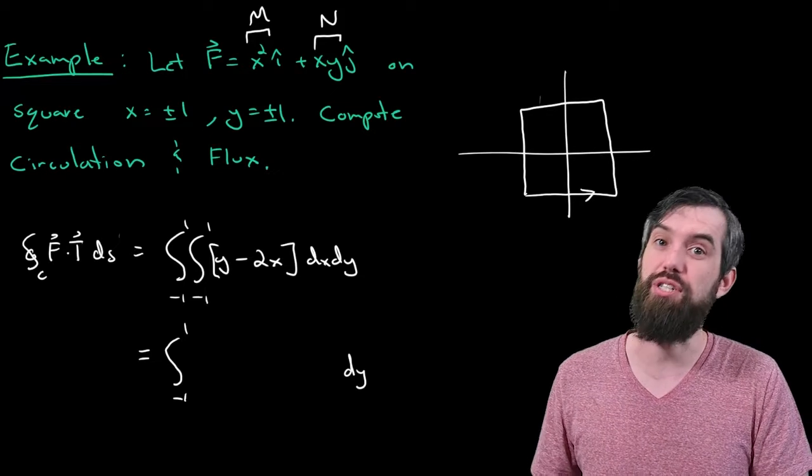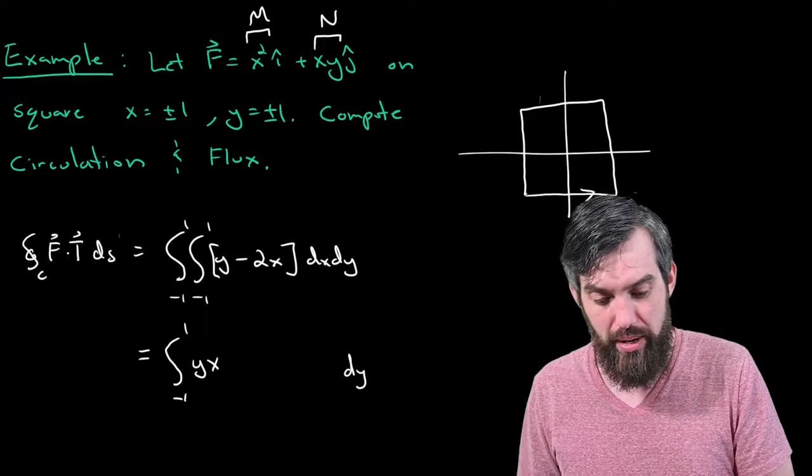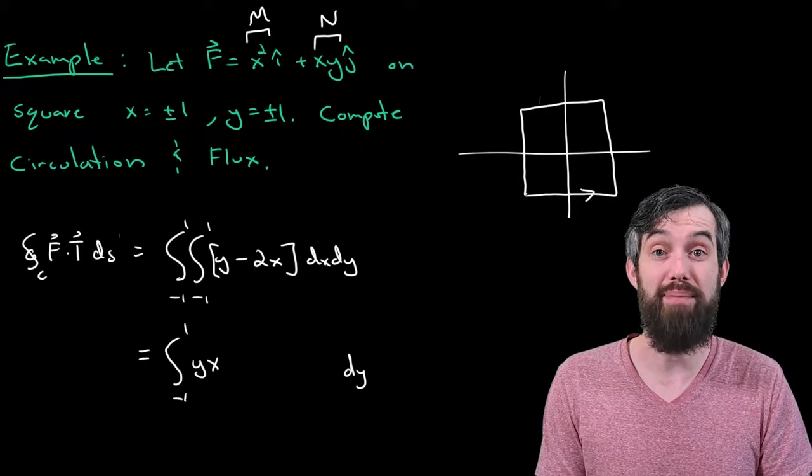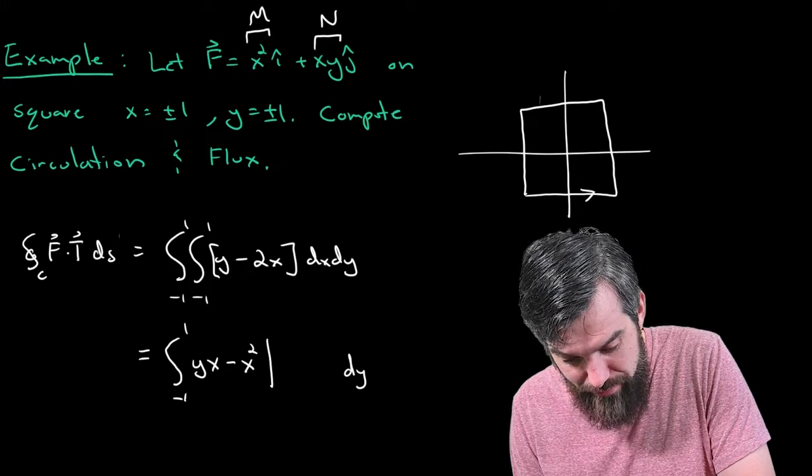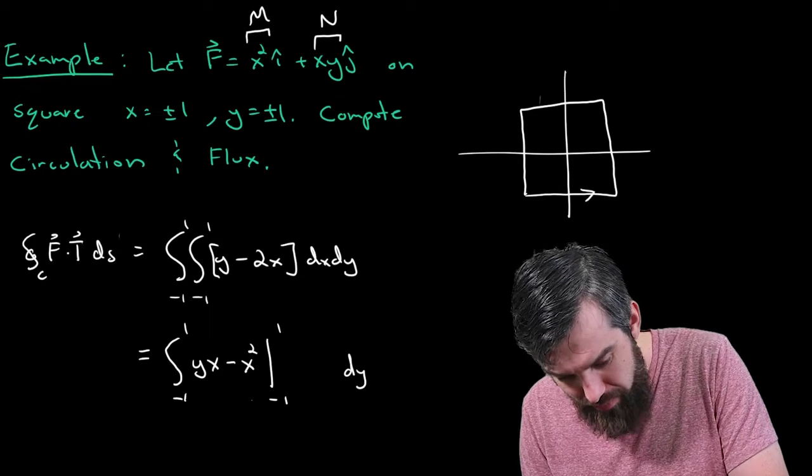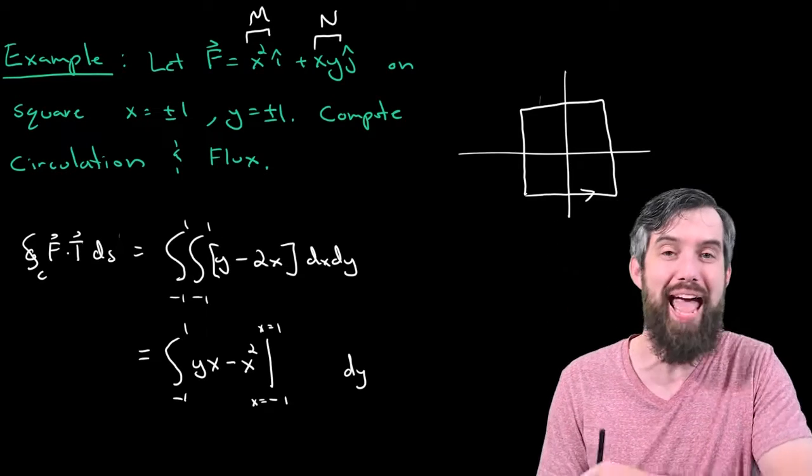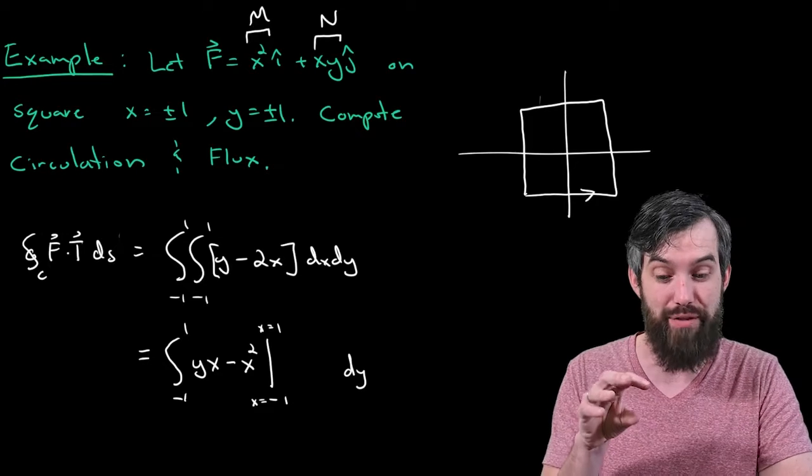The integral of y, which is a constant with respect to x, it integrates out to being yx. And then, integrating out minus 2x is going to give minus x squared, and then all of this evaluated between x equal to minus 1 and x equal to plus 1. And if you wish, you could even be pedantic about it and write the x equal to minus 1 and the x equal to plus 1 as well, just to be clear that this is evaluated at x values.